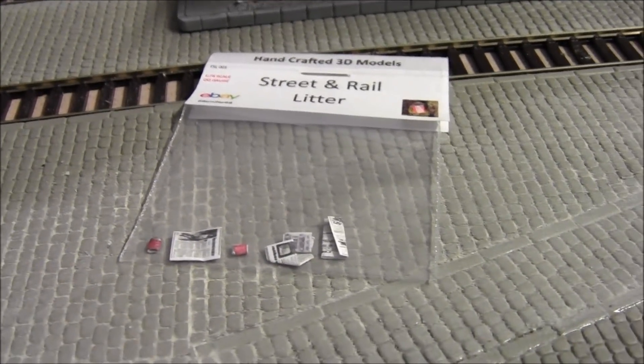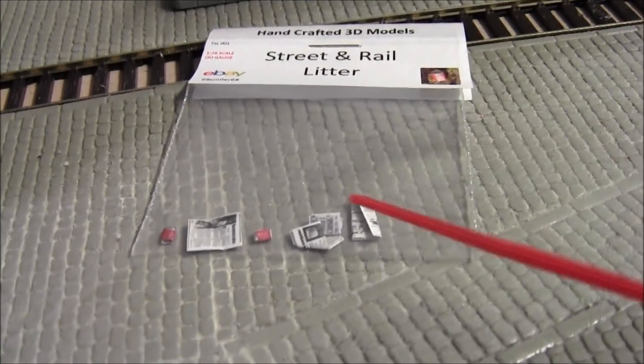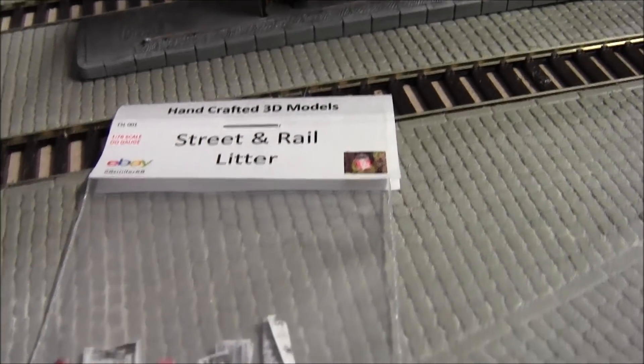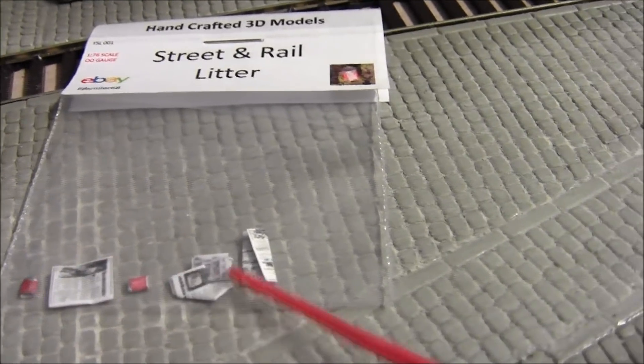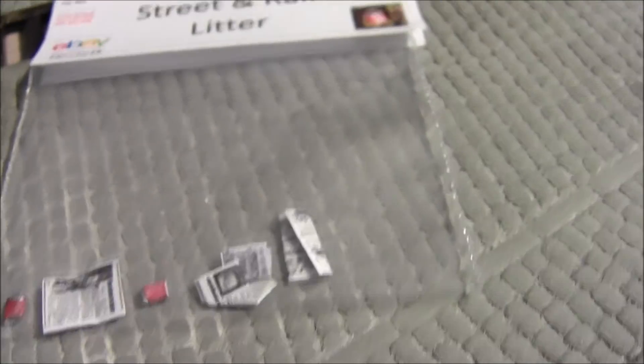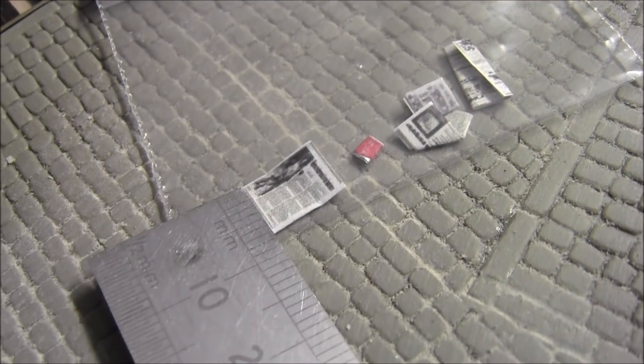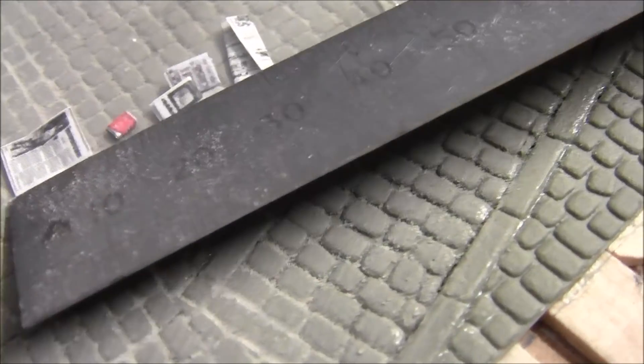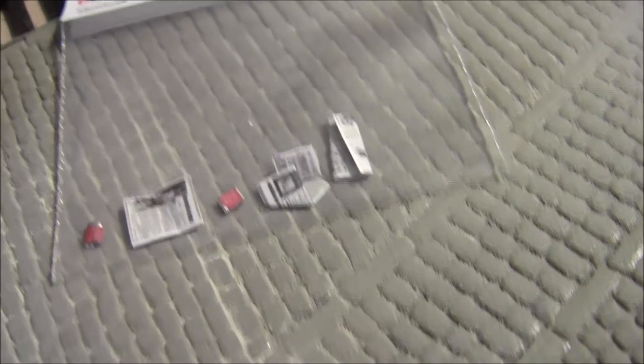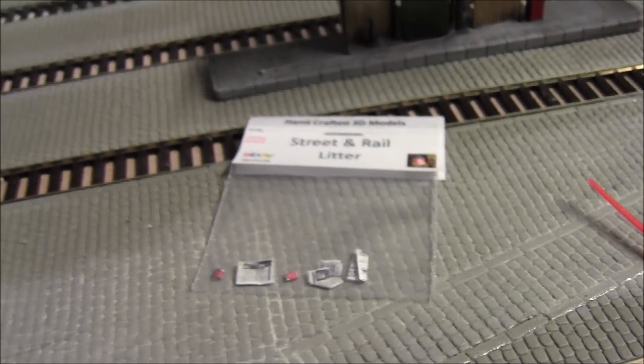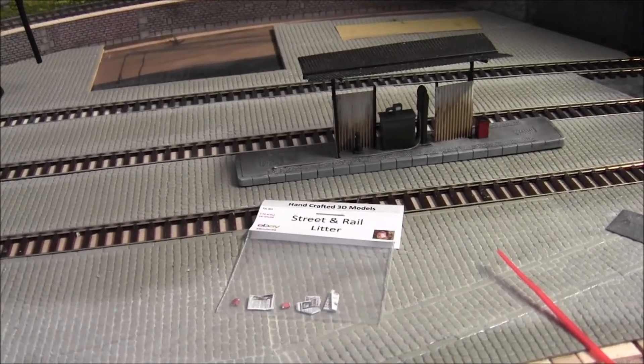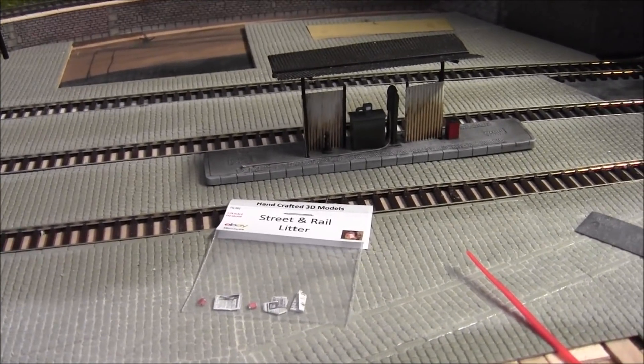So thank you very much for that Gary, I will use that on the layouts at some point but I won't be throwing it around as rubbish. I might put one of those cans in one of the figure's hands or something. But yeah look at the detail. To show you the scale of these things I'll have to put a ruler alongside. So it's literally 7mm across by 10mm high, average size of the newspaper I guess. But yeah thanks for that Gary and thanks for watching, bye.